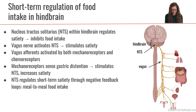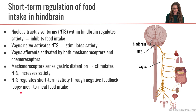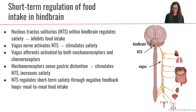This is a level of regulation that is short-term — meal to meal. Stretching of the GI tract stimulates afferent signals from the vagus nerve to travel up to the nucleus tractus solitarius to stimulate satiety, part of our short-term, meal-to-meal regulation.